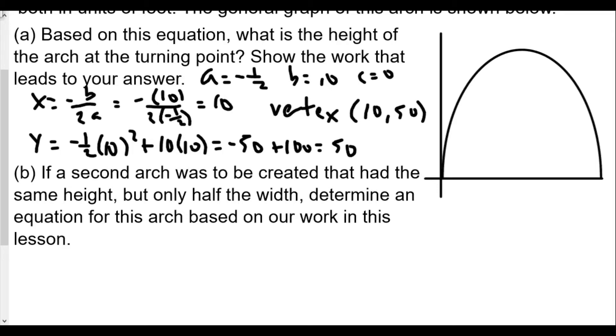So we're going to compress this by a factor of 2, right? And for this to happen, what we want to do is, well, if f of x was equal to negative 1 half x squared plus 10x, to have half the width, we need f of 2x. And f of 2x means we're going to replace all the x's with 2x, right?